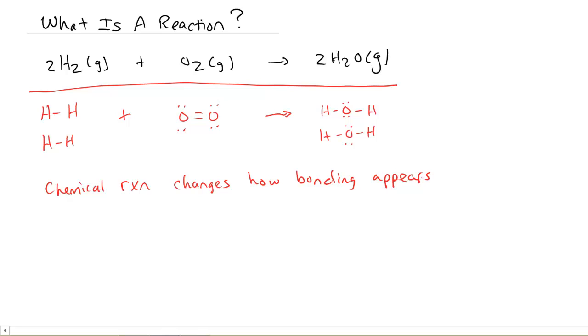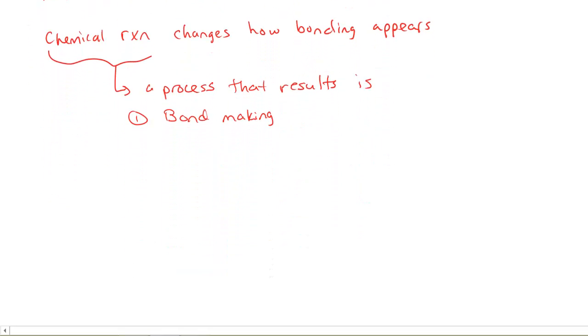So that's really what we're saying. But we can get more detailed than that. What I notice is that some bonds are broken, some are made. So let's make it even better, let's improve this. A chemical reaction is now going to be a process that results in one of three things: bond making. And that would be a reaction that happens something like this. If I have A plus B, and they formed A bonded to B, that would be a bond making reaction.